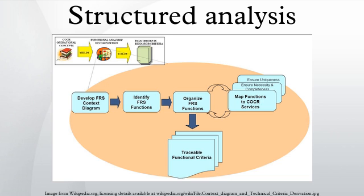A data dictionary or database dictionary is a file that defines the basic organization of a database. A database dictionary contains a list of all files in the database, the number of records in each file, and the names and types of each data field. Most database management systems keep the data dictionary hidden from users to prevent them from accidentally destroying its contents. Without a data dictionary, however, a database management system cannot access data from the database.